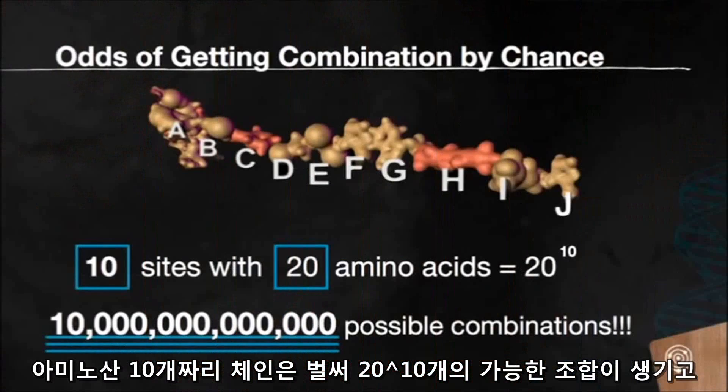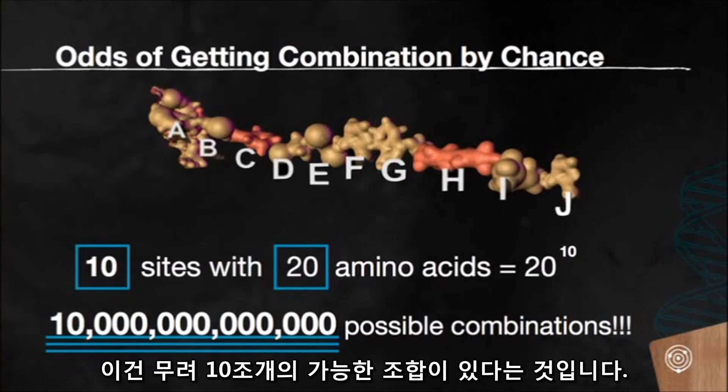In a chain of amino acids that's just 10 sites long, you're already at 20 to the 10th possible combinations. That's 10 trillion possibilities.